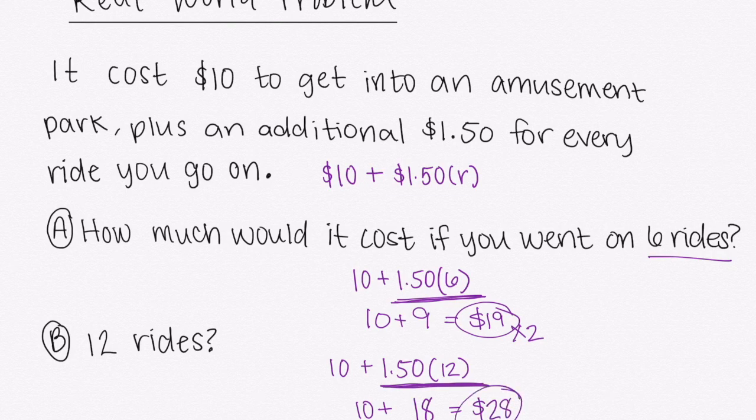So if it was $9 for 6, for 12, it should be 18, right? My answer is not going to just be 19 times 2. We're going to have to also add that 10 so that it is $28. All right, not, if I just took that by 2, we'd get 38, right? Not proportional because of that additional $10 it costs just to get in.